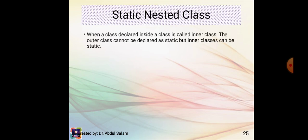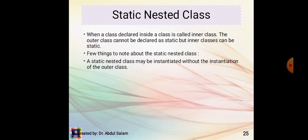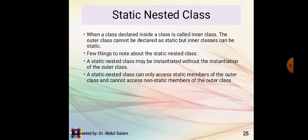Static nested class: when a class is declared inside another class, it is called an inner class. The outer class cannot be declared as static, but an inner class can be. A static nested class may be instantiated without instantiation of the outer class. A static nested class can only access static members of the outer class and cannot access non-static members.